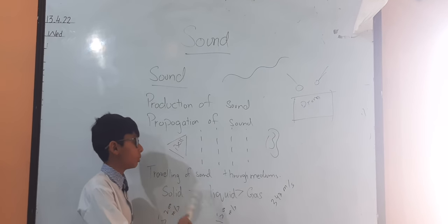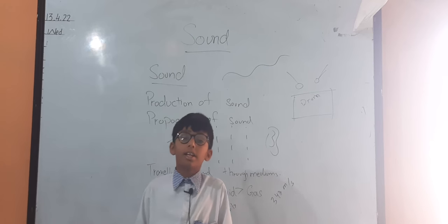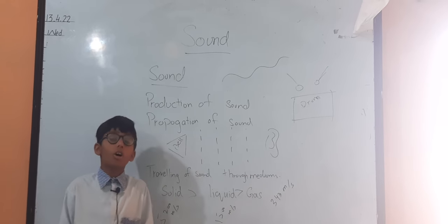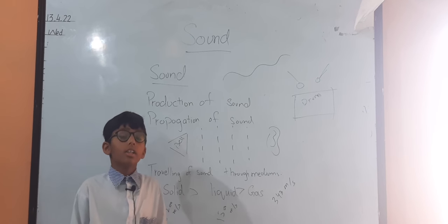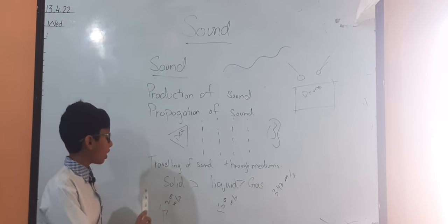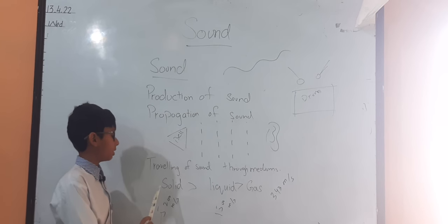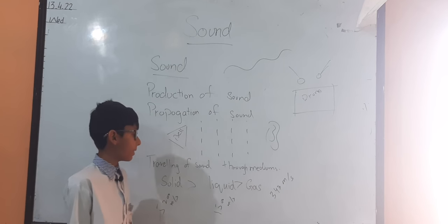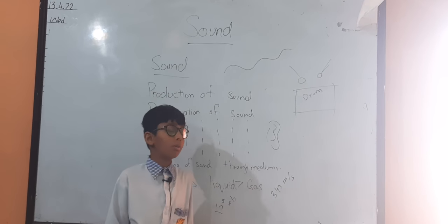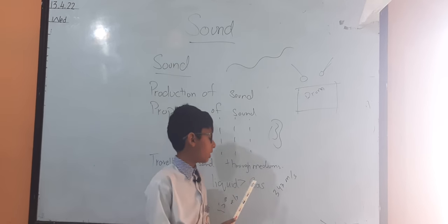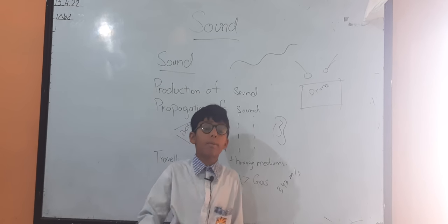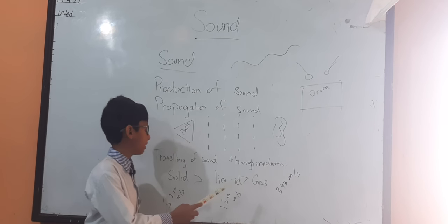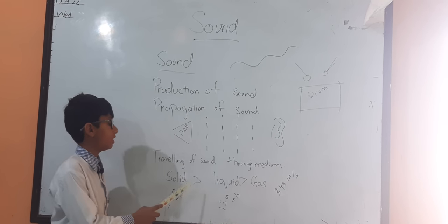I will tell you about the speed of sound in different materials. In solids, the speed of sound is 5200 meters per second. In gases, it is 340 meters per second. In water, the speed is about 1500 meters per second. In air, the speed is about 760 meters per second.